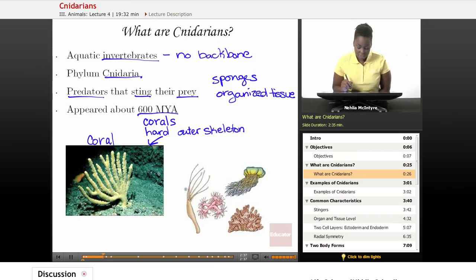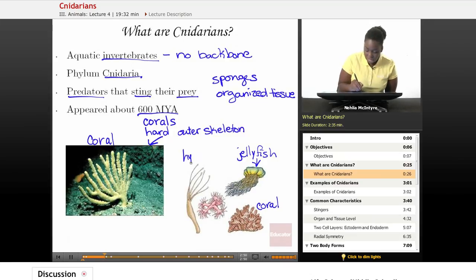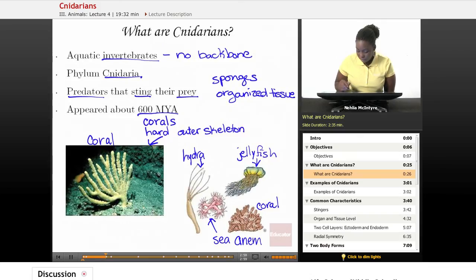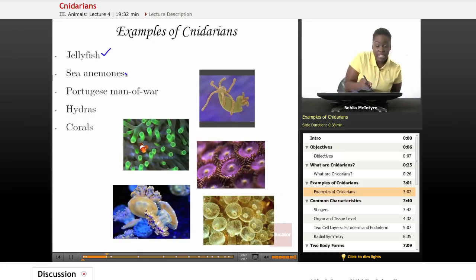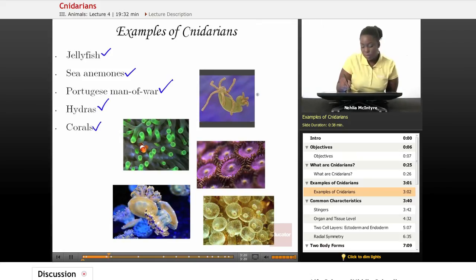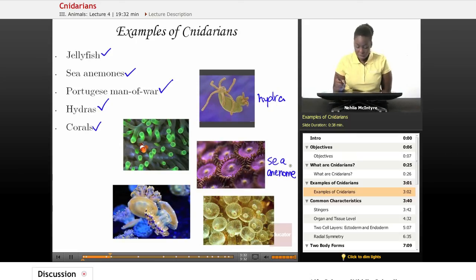Here are some pictures of Cnidarians that we'll discuss, such as the jellyfish, coral, hydra, and sea anemone. So some examples of Cnidarians would be jellyfish, sea anemones, the Portuguese Man of War, which is actually made up of four organisms put together, and hydras and corals. This would be a hydra, these are sea anemones, and these are types of jellyfish.